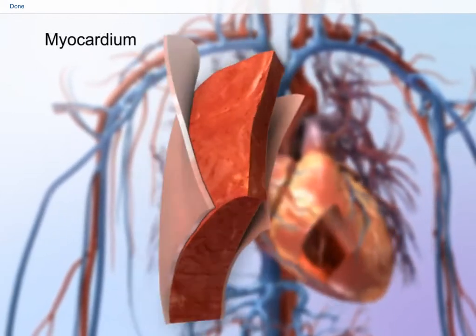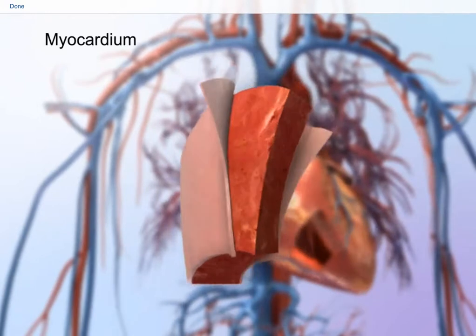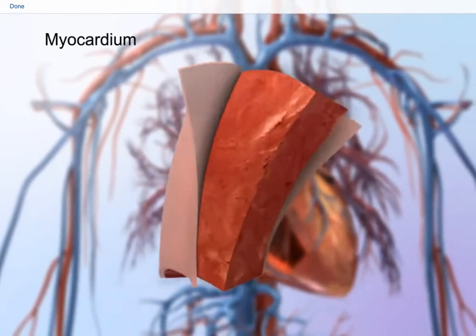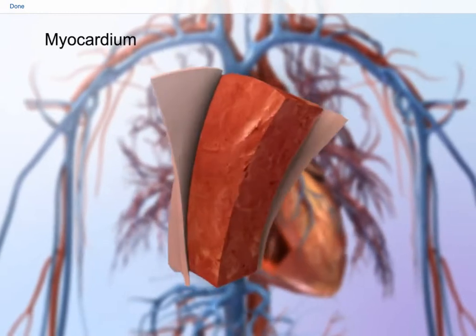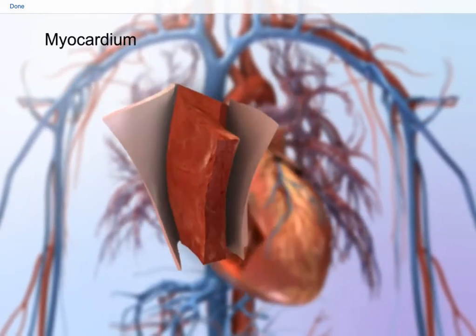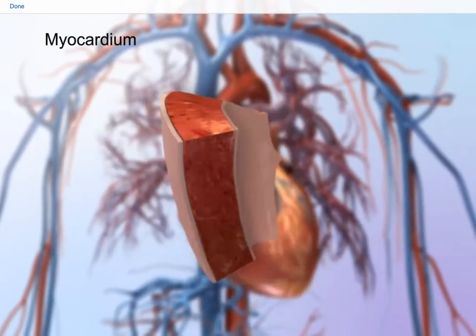The middle layer is called the myocardium. The myocardium is responsible for the heart's pumping action. Its strong muscle tissue makes powerful, continuous contractions possible. This thick layer performs the bulk of the heart's work.